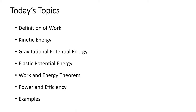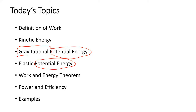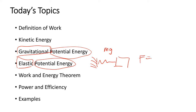We have the definition of work, and we are talking about kinetic energy and potential energy. The potential energy has two types for today's class: the gravitational potential energy, which is the effect of mg, and the elastic potential energy, which is the effect of the spring force. We may also look at examples where the spring constant is not constant, but the force is a function of displacement.